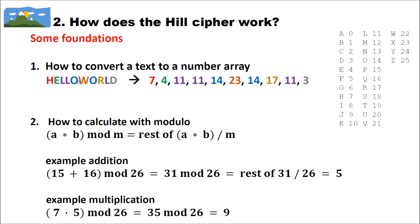The next thing we need to know is how to calculate with modulo. For instance, we have A combined with B — this can be a multiplication or an addition — and then we take mod M, meaning we take the remainder of that operation divided by M. For example, 15 plus 16 mod 26: 15 plus 16 is 31, and 31 mod 26 equals 5. Another example: 7 multiplied by 5 mod 26 equals 35 mod 26, which is 9.